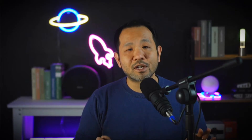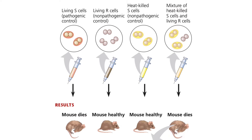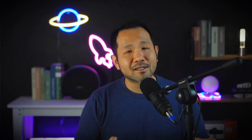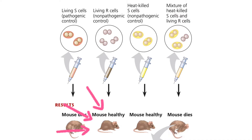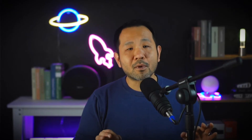Here's where things get more interesting. Griffith killed the S-strains by boiling them, and upon inoculation into mice, nothing happened — which makes sense, as that's how we sterilize things. But when Griffith mixed this boiled S-cell concoction with normal living R-cells, the inoculation of that mixture resulted in the death of the mice. So while killed S-cells or regular R-cells alone had no pathogenic effect, their mixture certainly did. Griffith proposed that something inside the S-cell leaked out during boiling, and when absorbed into the R-cells, it made them pathogenic. He called this process transformation — a term still used in molecular biology today.